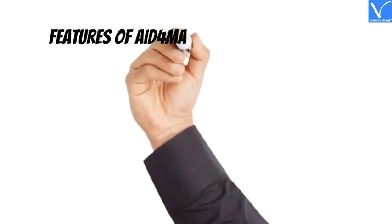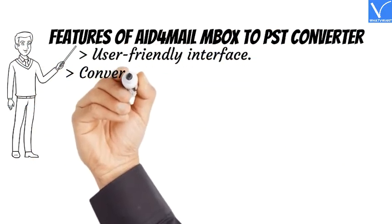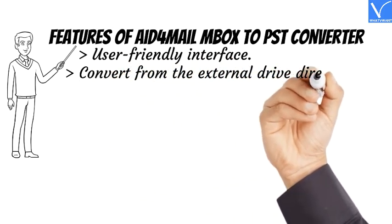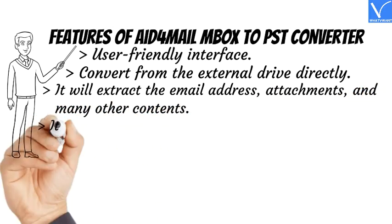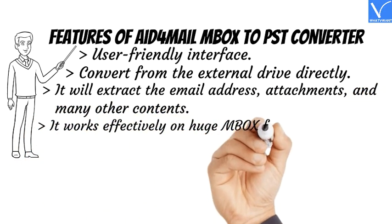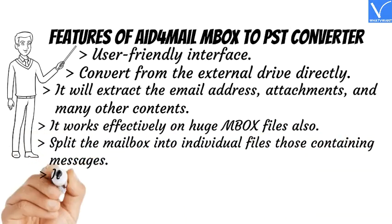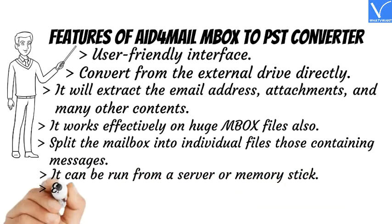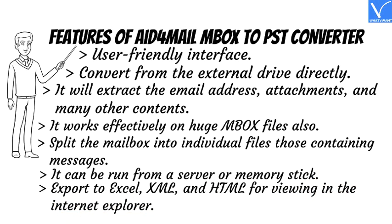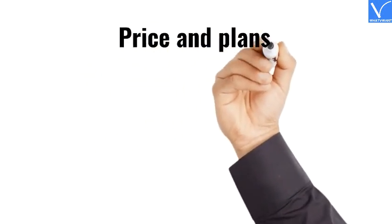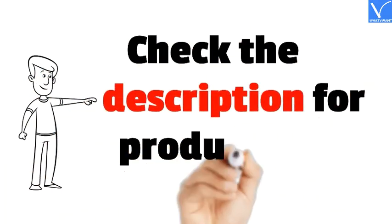Features of Aid for Mail MBOX to PST Converter: User-friendly interface. Convert from external drive directly. Extracts email addresses, attachments, and other contents. Works effectively on large MBOX files. Splits mailbox into individual files containing messages. Can be run from a server or memory stick. Export to Excel, XML, and HTML for viewing in Internet Explorer. Check the description for the product link.